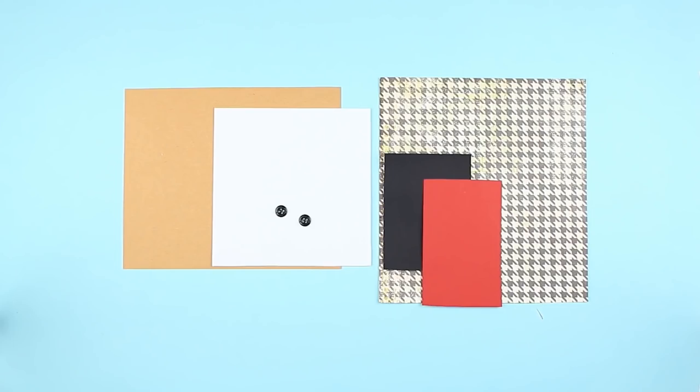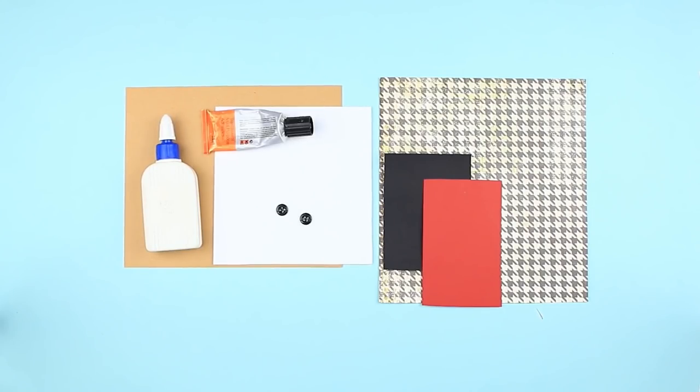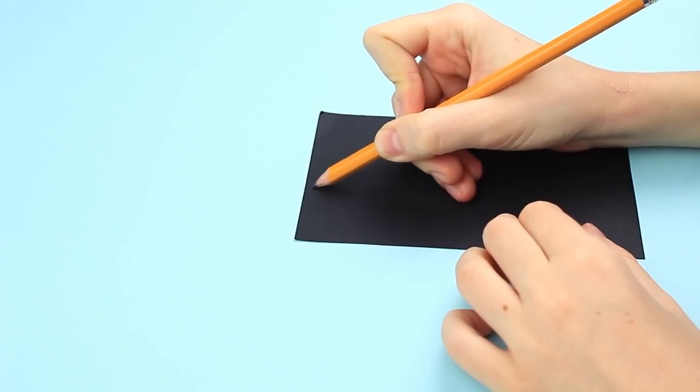For the second scrapbook idea, we'll need craft cardstock, white cardboard, scrapbook paper, black and red cardboard, buttons, white glue, and multi-purpose glue. Let's make a scrapbook photo page.